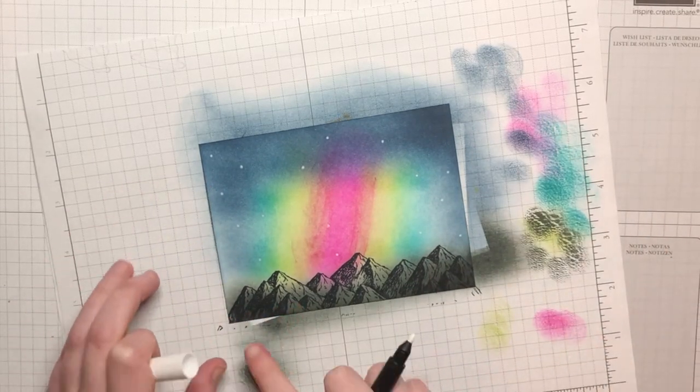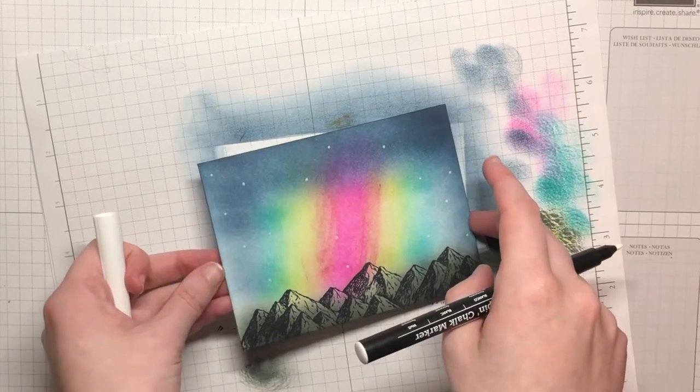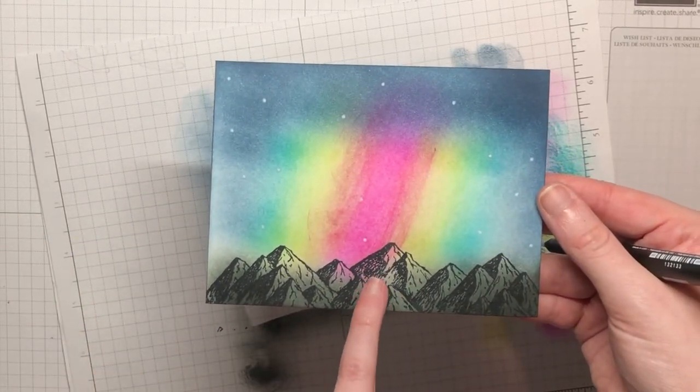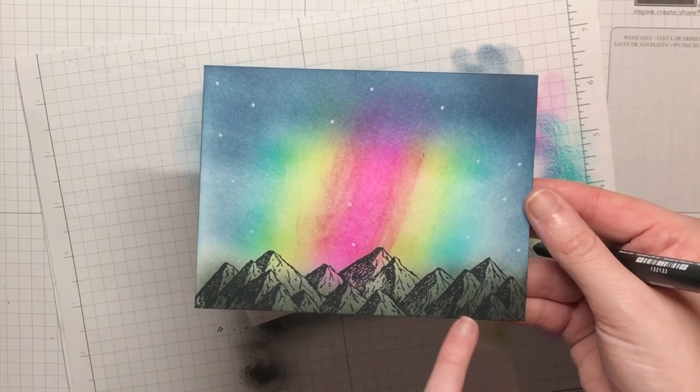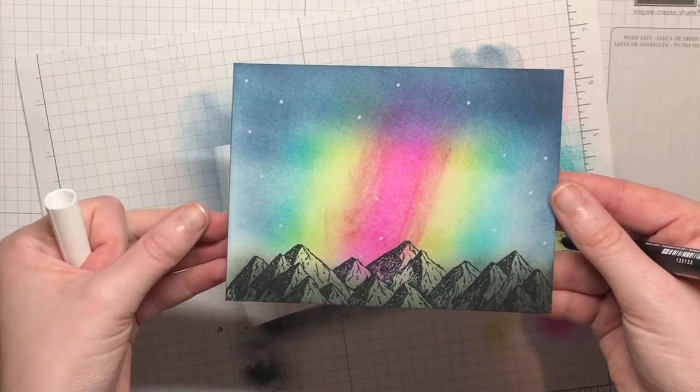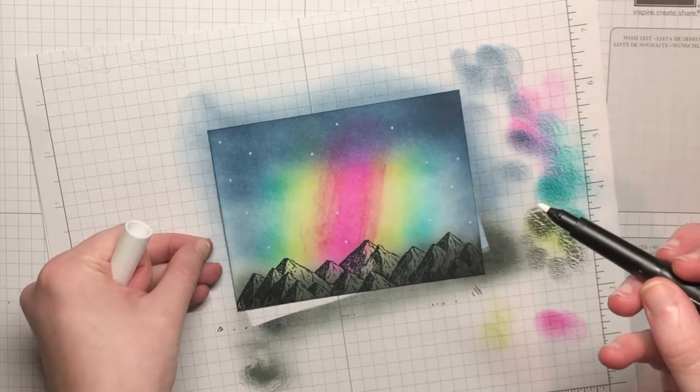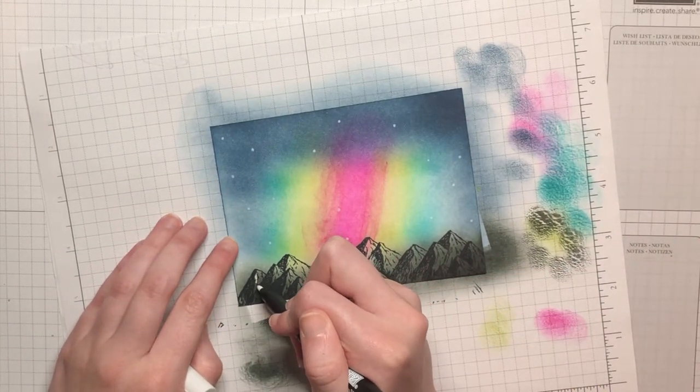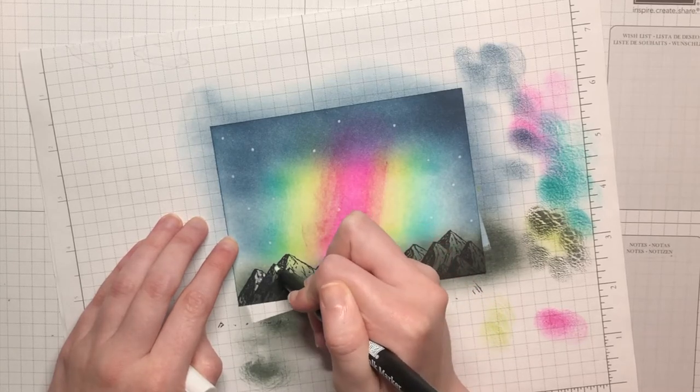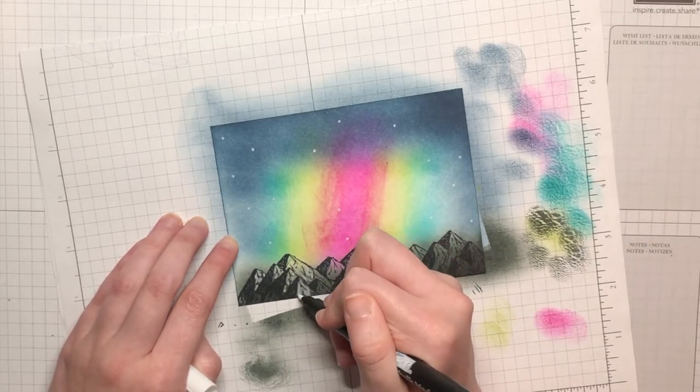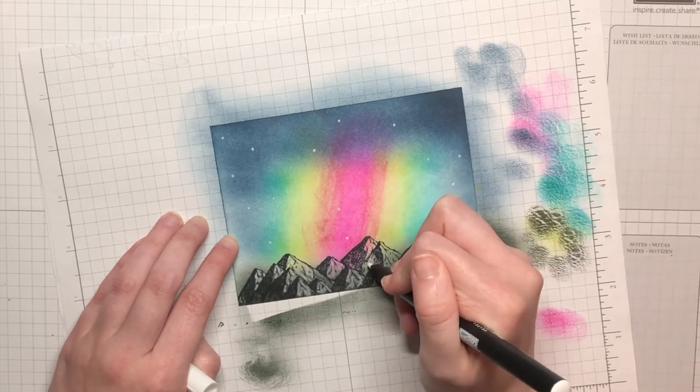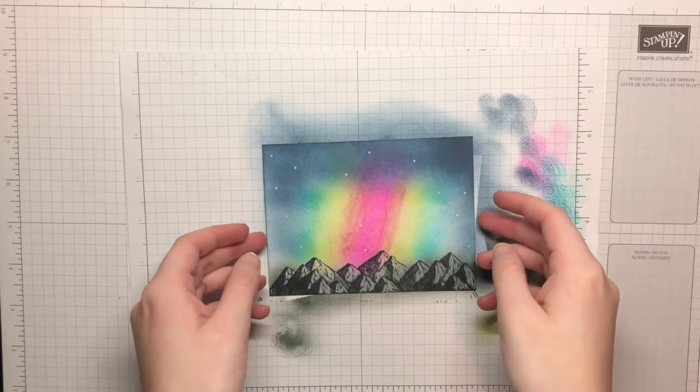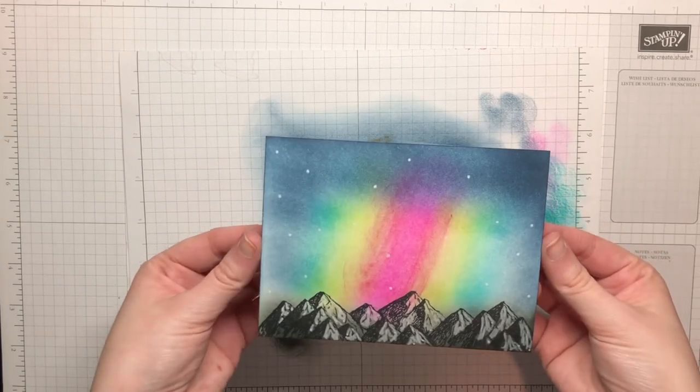So then what I'm going to do is you can see there are some darker spots and those are the shadows of the mountains, so in the lighter portions I'm just going to kind of scribble around some of the white. You don't have to be too careful with this and you might lose some of the black marks in the stamp but that's okay. So I'm going to go ahead and set this piece to the side to dry a little bit.